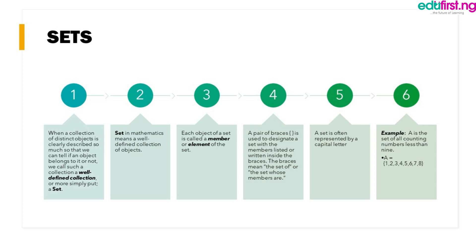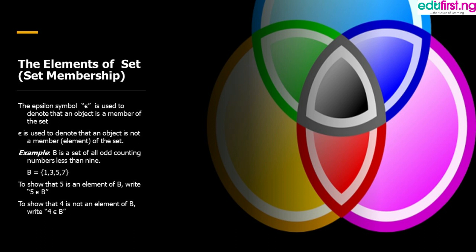The elements of a set or set membership. The epsilon symbol is used to denote that an object is a member of the set. The epsilon symbol that is crossed out is used to denote that an object is not a member or element of the set.